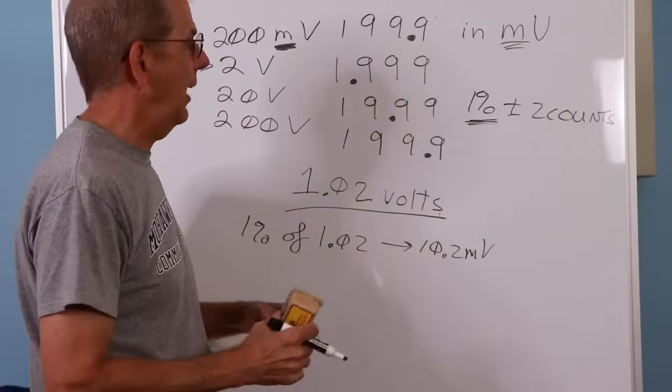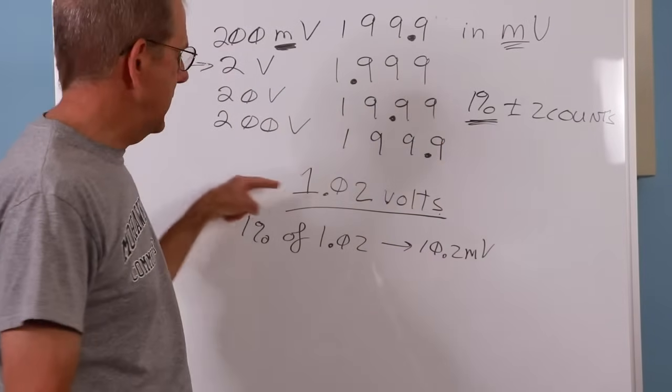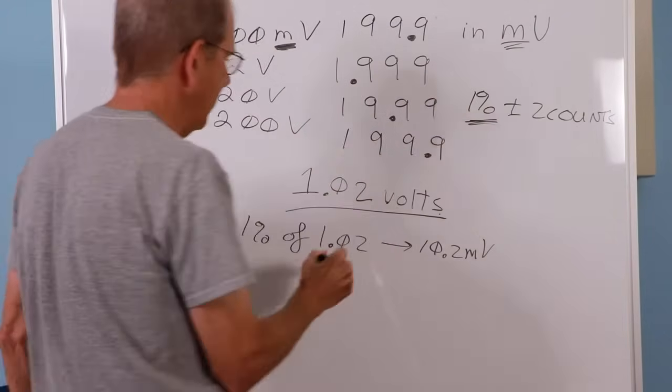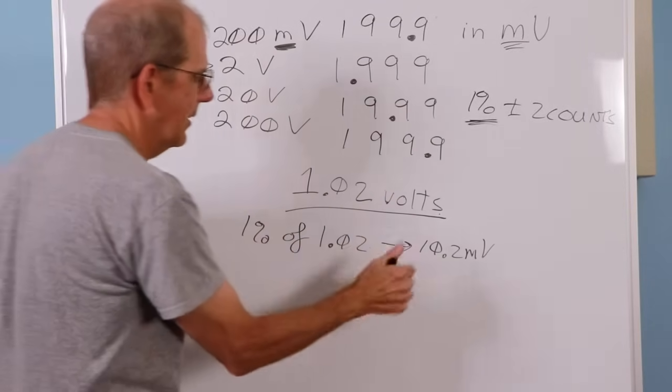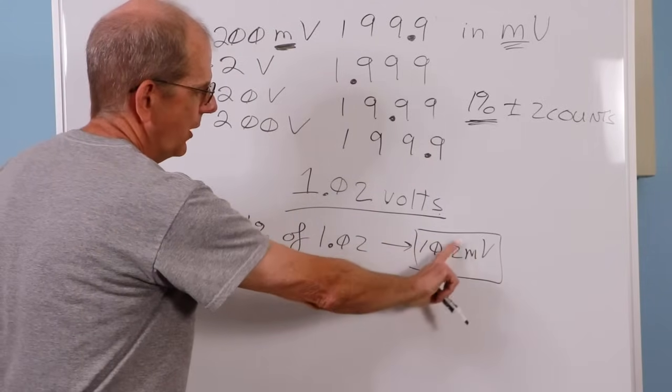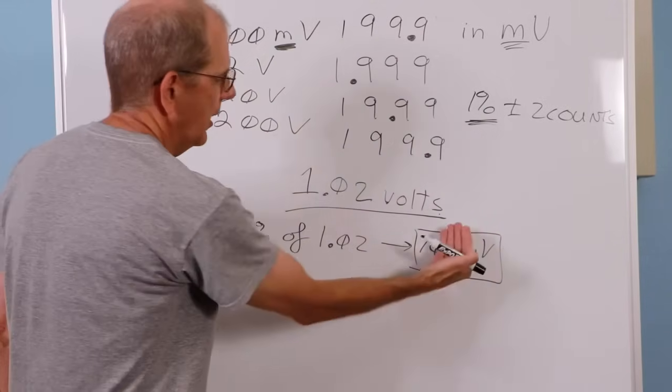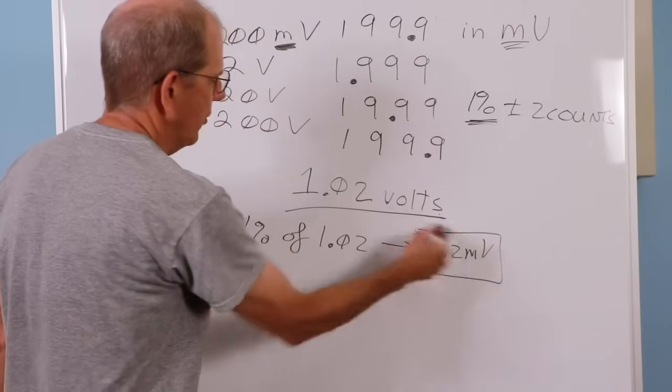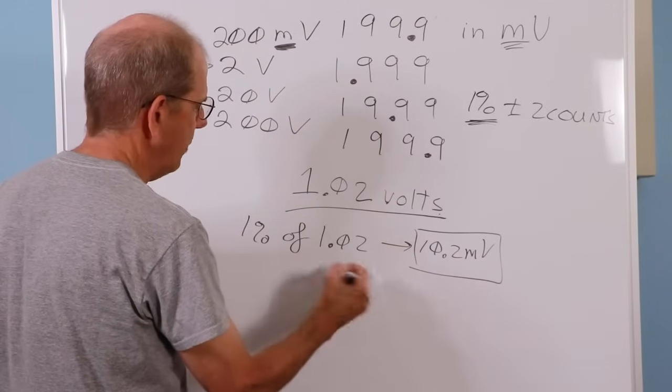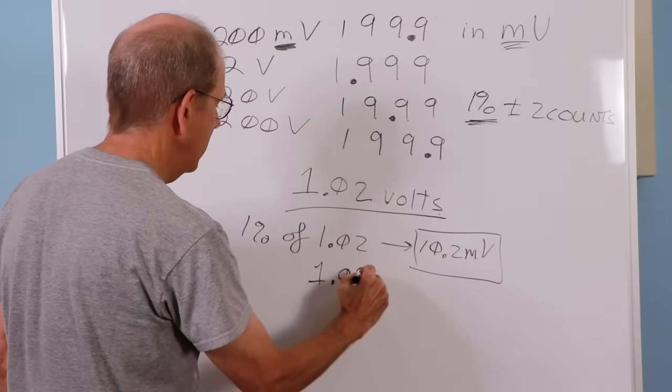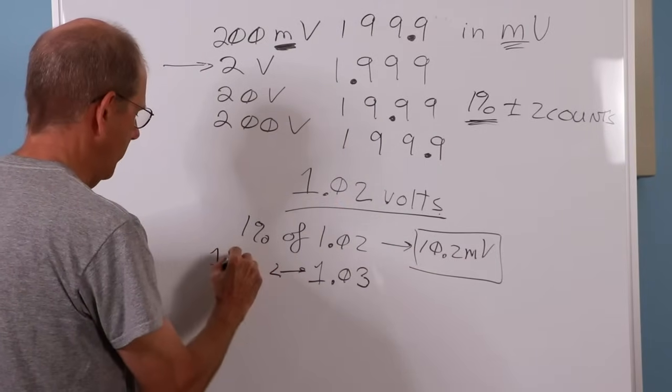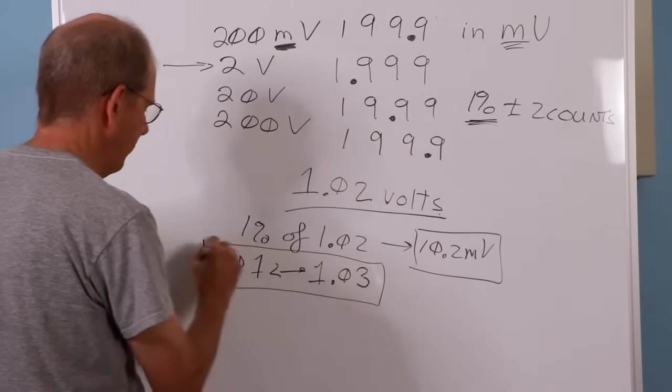Now, you also have this plus or minus two counts. So if I'm on this scale, this two-volt scale, it's not enough just to say, oh, well, I'm reading 1.02 plus or minus 10 millivolts. You know, if I just said that, plus or minus 10 millivolts, roughly, I'll just ignore the 0.2 millivolts because it's beyond our resolution. So if I just said it's plus or minus 10 millivolts, then what we're really saying is, well, that's the tens of millivolts digit. So we're saying that it could be as big as 1.03. It could be as small, taking it away as 1.01. That's the range if we were just looking at the percentage.